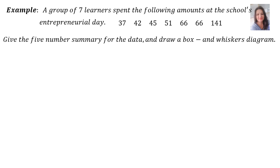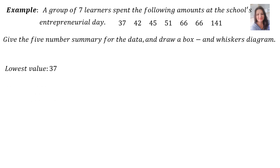Let's do an example. A group of seven learners spent the following amounts at the school's intrapreneurial day. The data is already arranged in ascending order: 37, 42, 45, 51, 66, 66, 141. We need to give the five number summary and draw a box and whiskers diagram. We start with the lowest value, which is 37, and the highest value, which is 141.